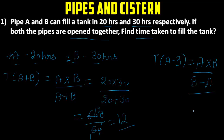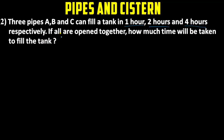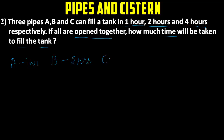Please click the like button below to see more videos like this. Now the second question: three pipes A, B, and C can fill a tank in 1 hour, 2 hours, and 4 hours respectively. If all are opened together, find the time taken to fill the tank. A takes 1 hour, B takes 2 hours, and C takes 4 hours — all filling, so we use positive signs with all pipes.